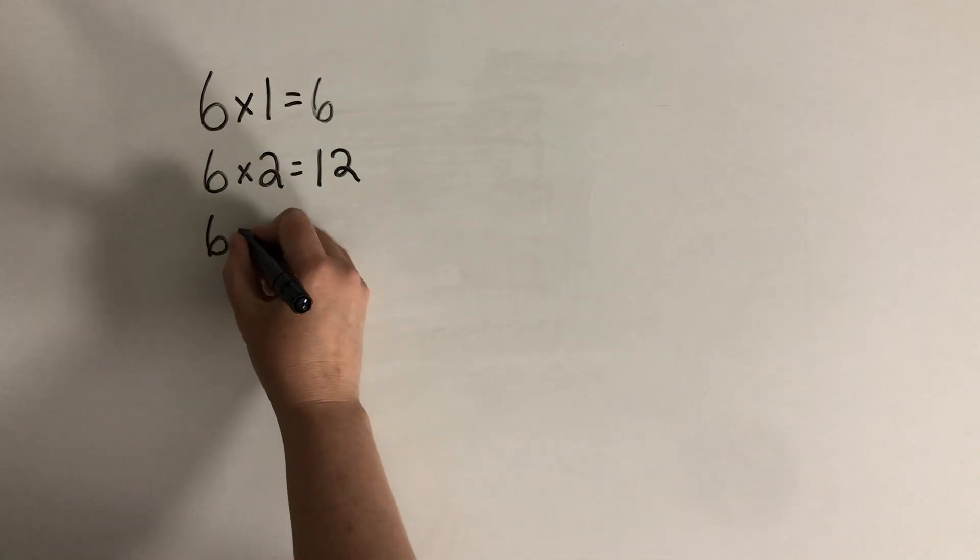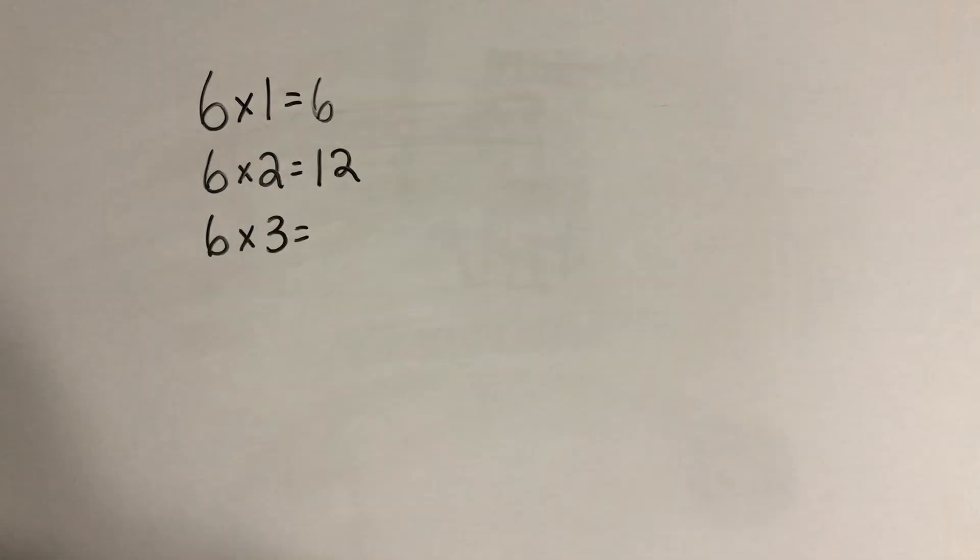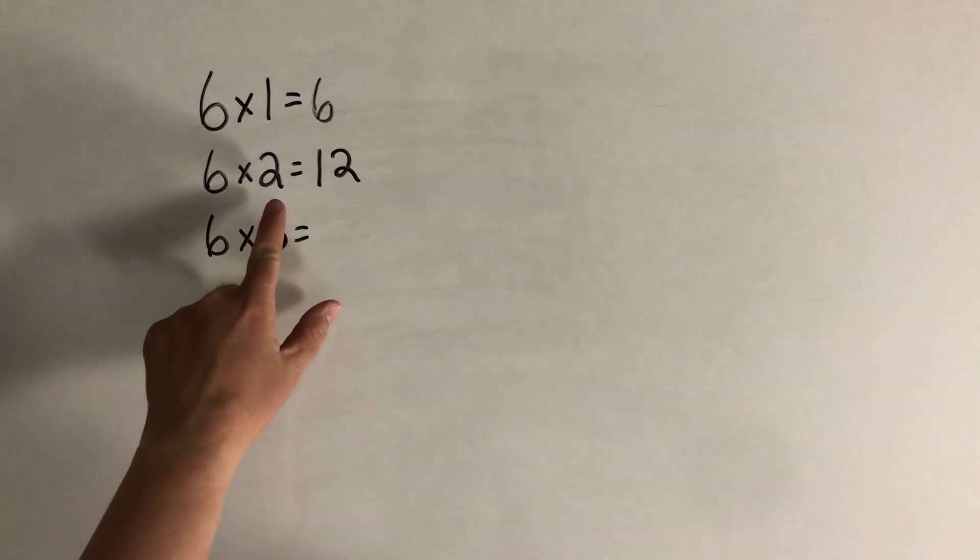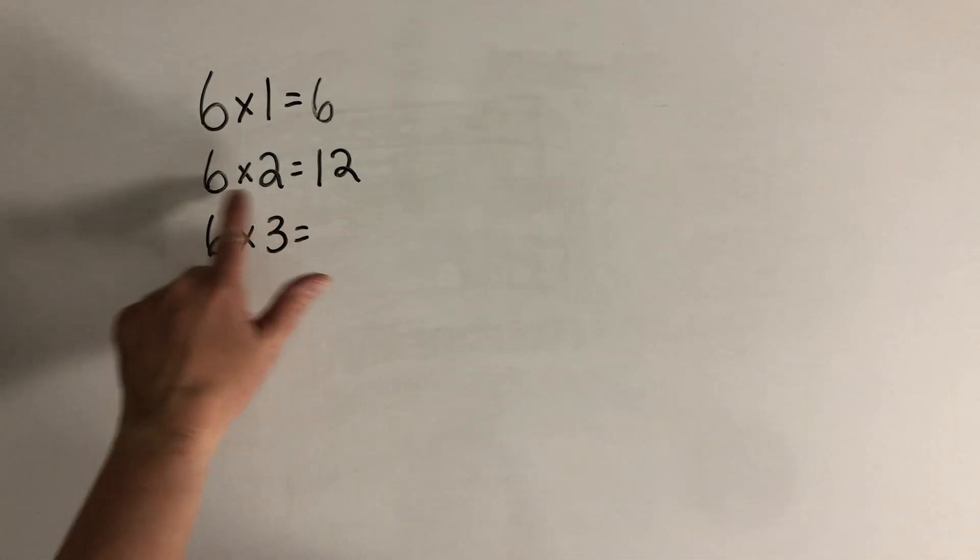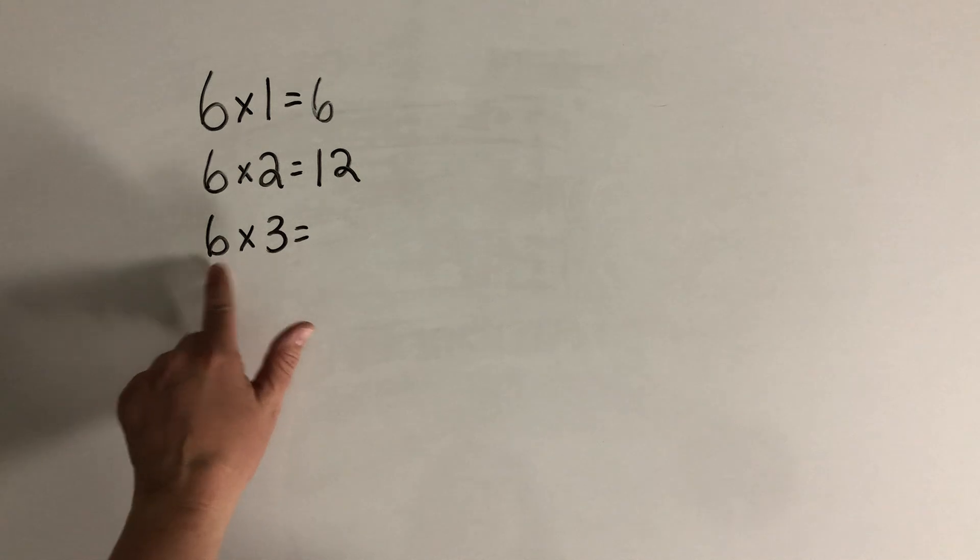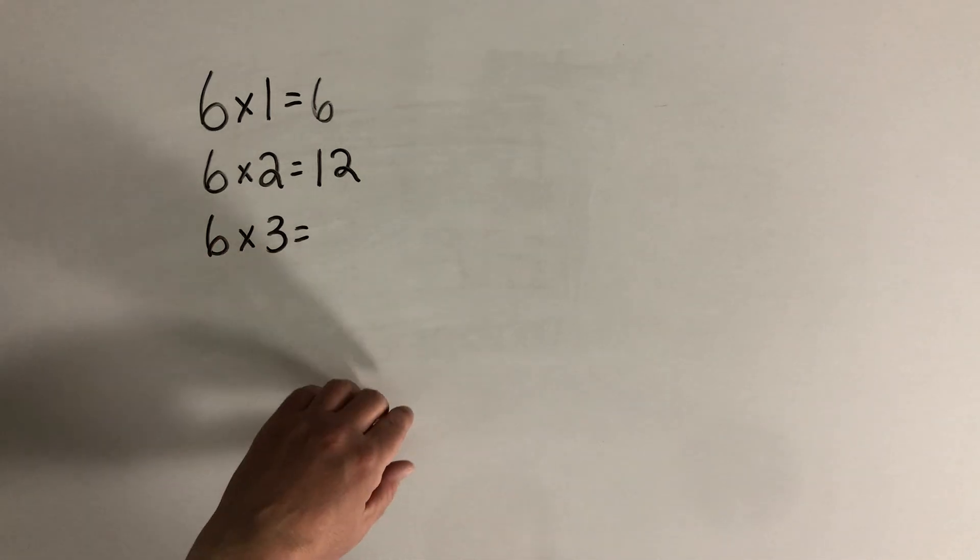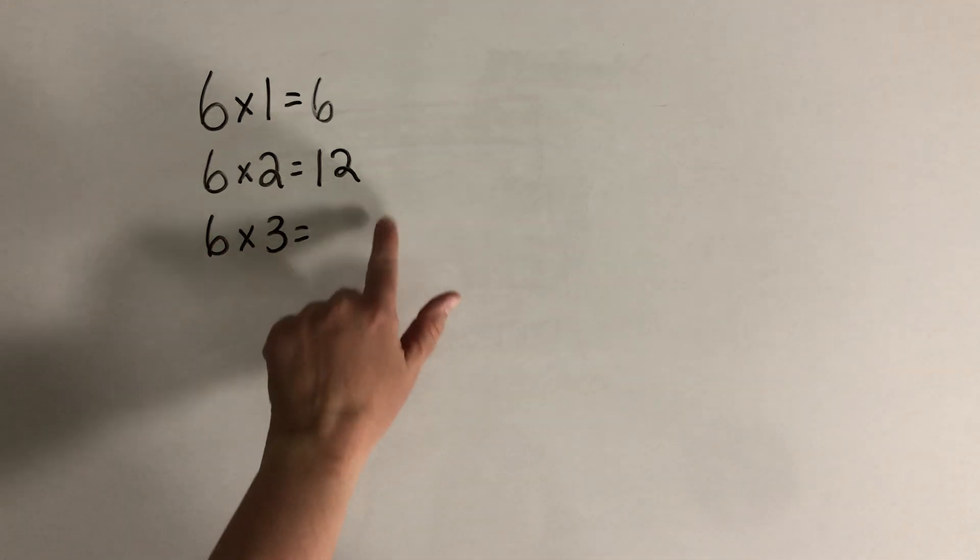For 6 times 3, I might think to myself, I know that 2 times 6 is 12. So 3 times 6 is going to be one more group of 6. So it'll be 18.